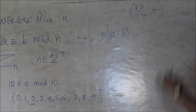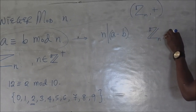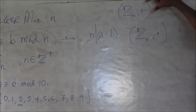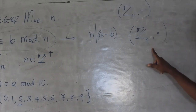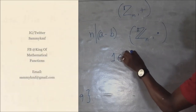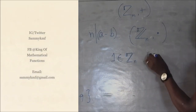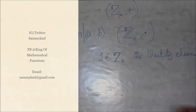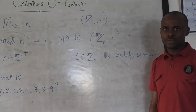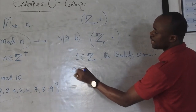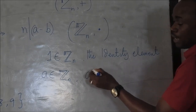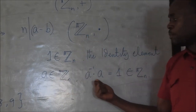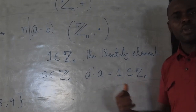I'm going to focus on Z_n under multiplication instead. For this to be a group, 1 in Z_n is supposed to be the identity element. Any element I pick must have an inverse such that when I multiply it with that element, I get 1 in Z_n.